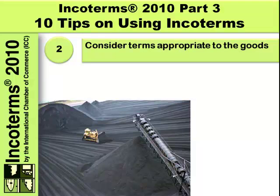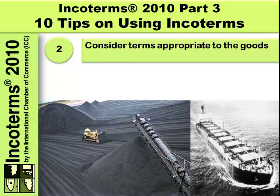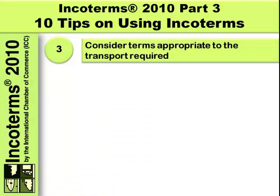Tip number two: consider terms appropriate to the goods. If we were shipping coal from Australia to China, would we use Free Carrier Broome Airport, Australia? I think not. We'd use a bulk carrier and probably a term like Free On Board, Port Broome, Australia.